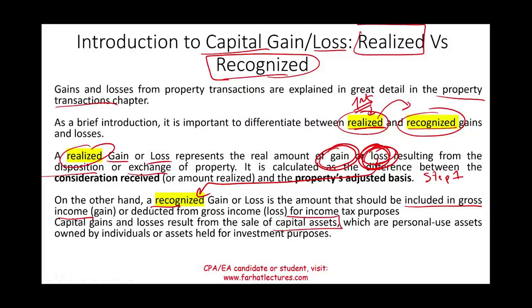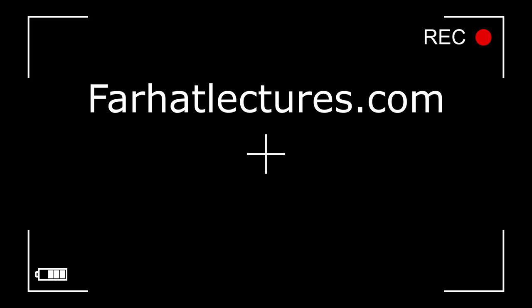For individuals, capital gains and capital losses result from the sale of capital assets. Capital assets include personal use assets — things used for personal purposes such as your personal vehicle, furniture, and cell phone — as well as assets held for investment purposes, such as stocks and bonds.